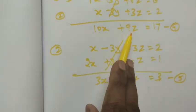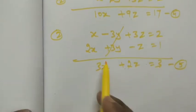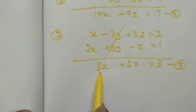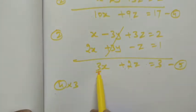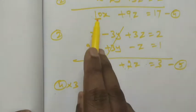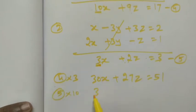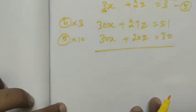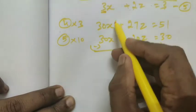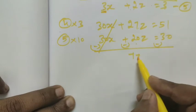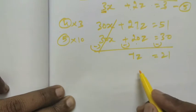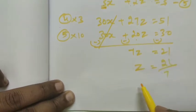Now from equations 4 and 5, we eliminate x or z. Multiply equation 4 by the coefficient of x and equation 5 accordingly: 30x plus 27z equals 51, and 30x plus 20z equals 30. Subtracting, 30x cancels, leaving 7z equals 21. So z equals 21 divided by 7, giving z equals 3.